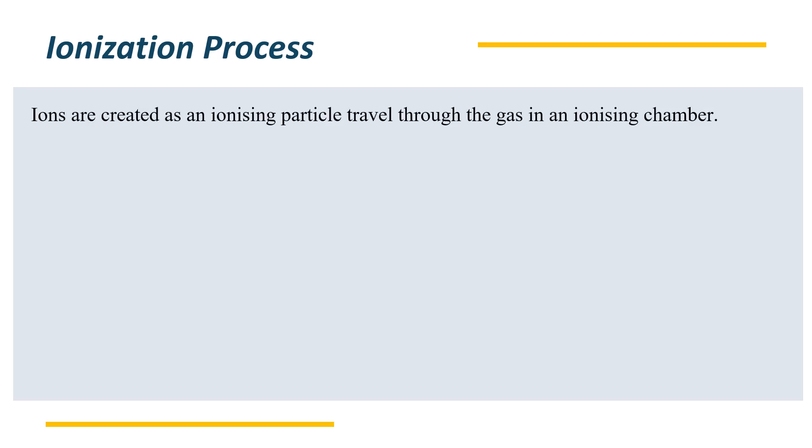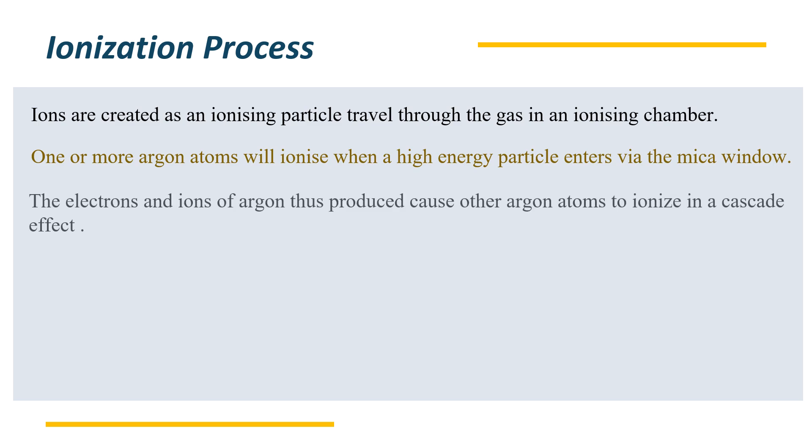What is that ionization process? Ions are created as an ionizing particle travels through the gas in an ionizing chamber. One or more argon atoms will ionize when a high energy particle enters via the mica window. The electrons and ions of the argon gas thus produced cause the other argon atoms to ionize in a cascade effect.